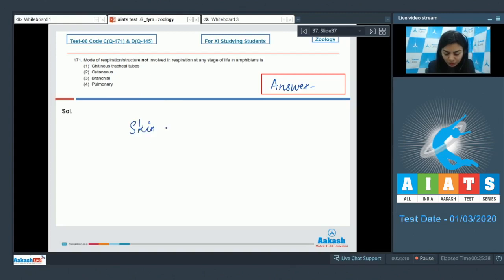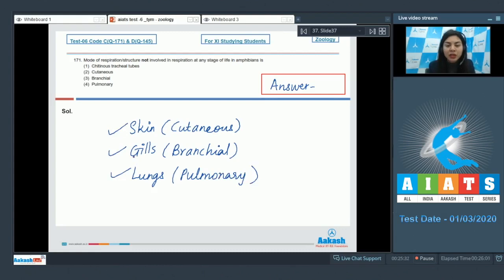Respiration is through skin called cutaneous respiration, through gills that is branchial respiration, and if lungs are used it's called pulmonary respiration. All these modes are seen in some stage of growing amphibians except for option one, chitinous tracheal tubes. This is a characteristic feature for insects, for example cockroaches. This is not seen in any stage of life in amphibians, so the right answer is option number one.